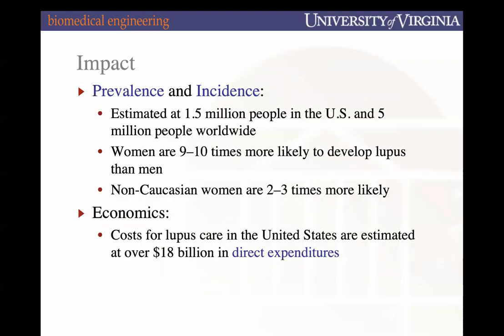The current prevalence rate is approximately 1 to 1.5 million people in the U.S. and 5 million worldwide with lupus. But because it is 'the great imitator,' these numbers are likely an underestimation of the true number of people suffering from lupus.